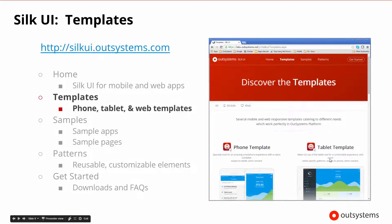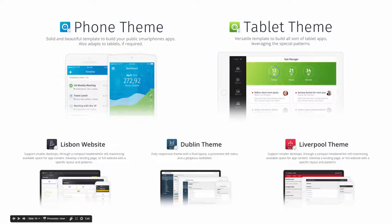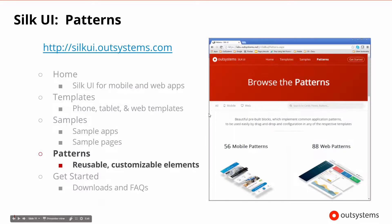There are mobile templates like the phone and tablet template, and then different types of web templates. For templates, we follow a theme — so we have a phone theme and a tablet theme. For the web, we have different looks and feels given city names: for example, Lisbon, Dublin with a nice left-hand nav, and Liverpool with a red and black design across the top.